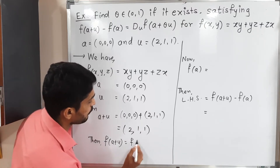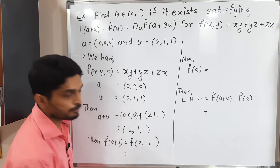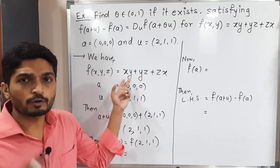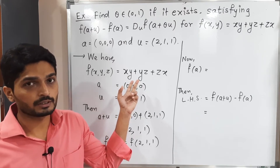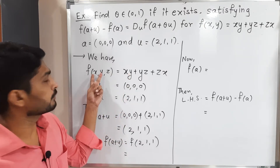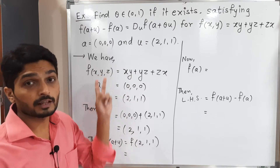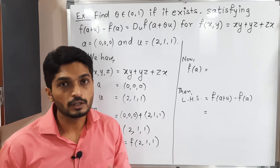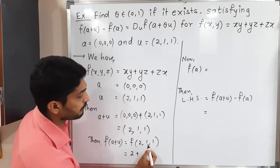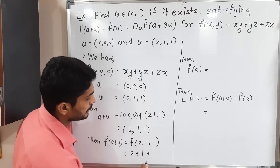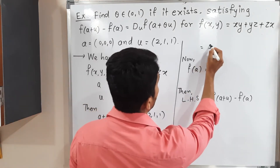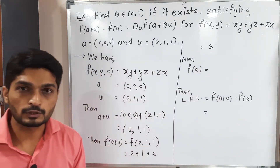Now let us compute f(a+u) = f(2,1,1). Using the definition f(x,y,z) = xy + yz + zx, we take the product of the first two components plus the product of the last two components plus the product of the first and last components: 2×1 + 1×1 + 2×1 = 2 + 1 + 2 = 5. So f(a+u) = 5.